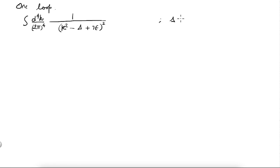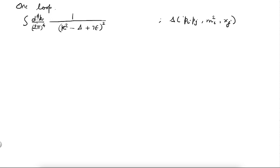As I have repeatedly said, Δ will be a function of the external momenta — actually the dot products — the masses that appear, and the Feynman parameters. This integral is divergent in the ultraviolet region because you have 4 powers of k in the denominator (k²)² and 4 powers of k in the numerator. So this will diverge logarithmically if you were to put a cutoff Λ. Let us see how things work out when you are doing dimensional regularization. This is UV divergent and we call it logarithmically divergent.